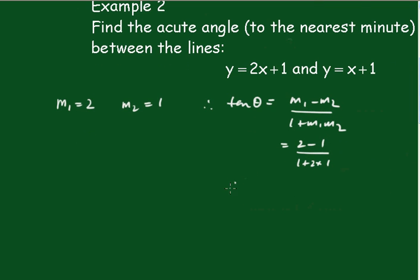Therefore, theta equals inverse tan of 1 third. And with that in your calculator, you get the result 18 degrees 26 minutes.